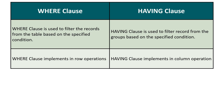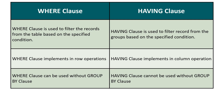Our next difference is: the where clause implements row operations while the having clause implements column operations. As we discussed, the where clause works on rows while the having clause deals with columns or groups. Our next difference is: the where clause can be used without the group by clause, while the having clause cannot be used without the group by clause. The where clause filters data row by row from the complete table, unlike the having clause.